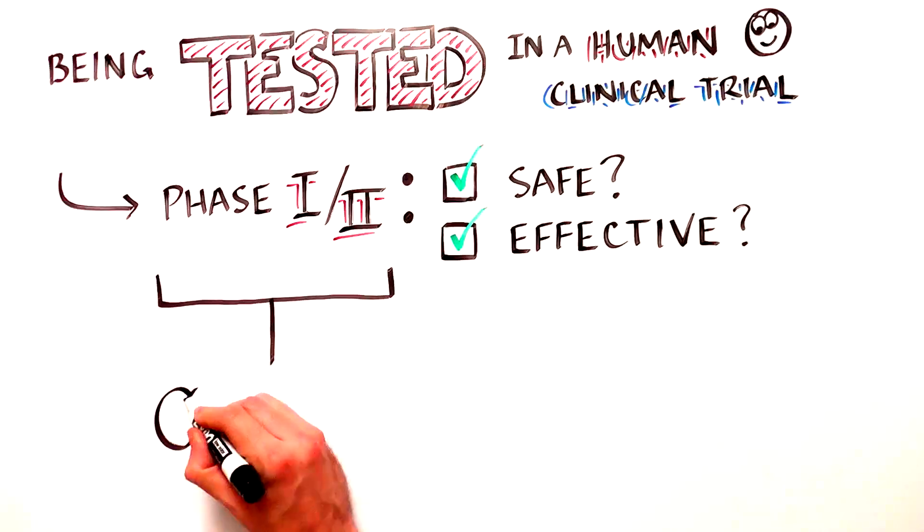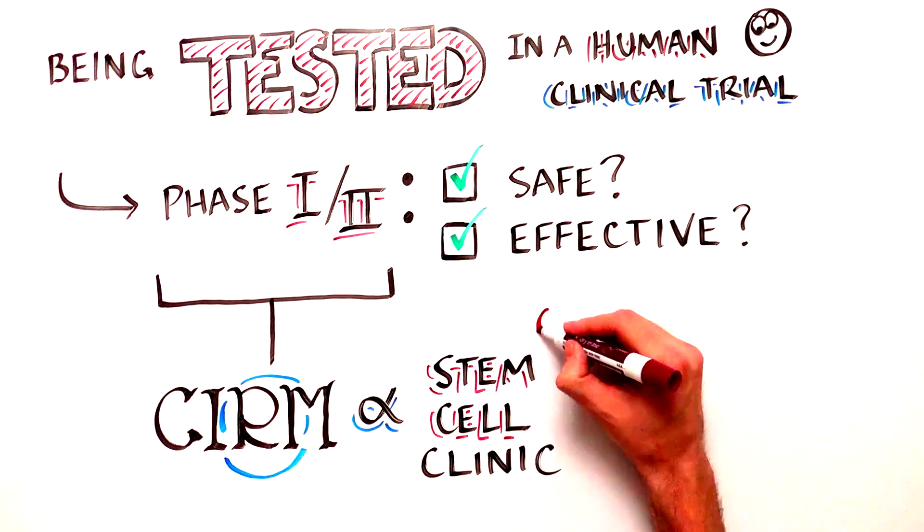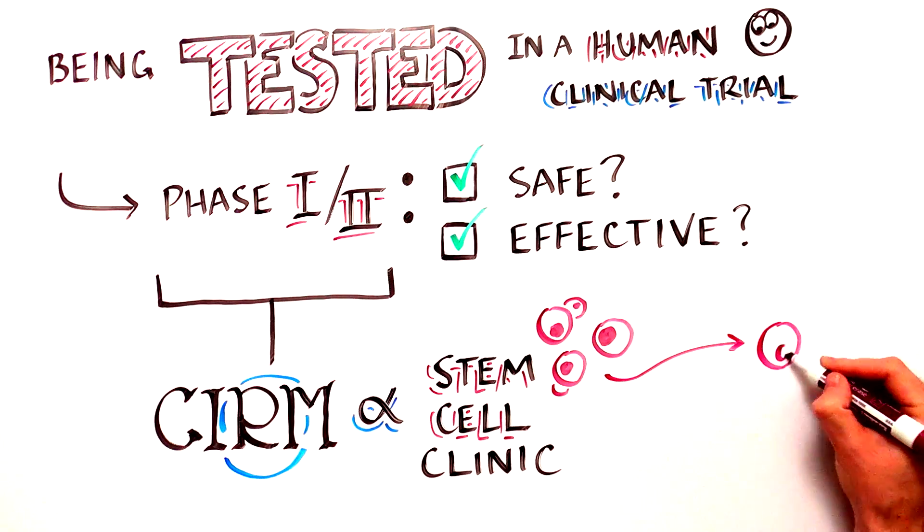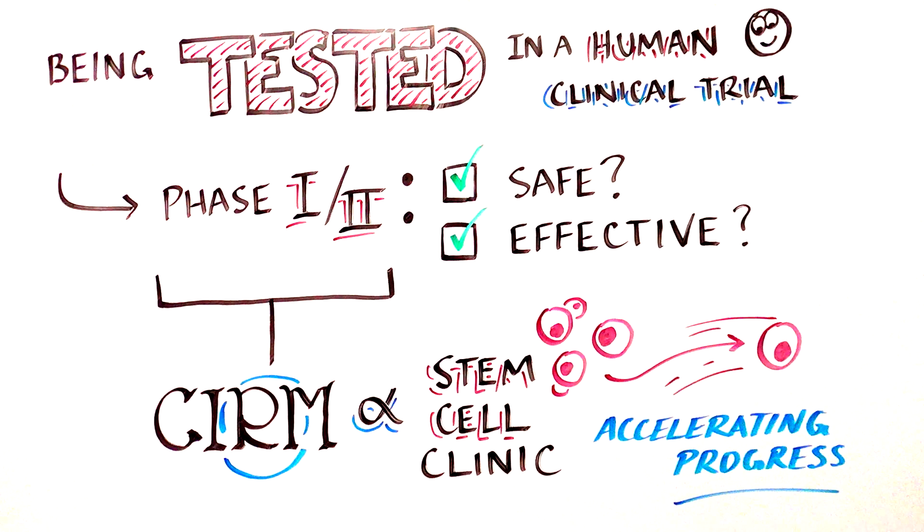This effort is in conjunction with CIRM's New Alpha Stem Cell Clinic Network, which is designed to accelerate the timeframe of clinical trials, getting safe and effective therapies to patients as quickly as possible.